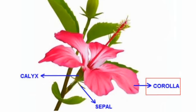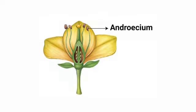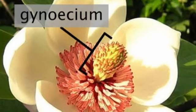The corolla is made up of colorful petals. The androecium is the male reproductive part of the flower; it consists of stamens, and each stamen is made up of an anther and a filament. The gynoecium is the female reproductive part of the flower; it is made up of carpels, and each carpel consists of a stigma, style, and ovary.